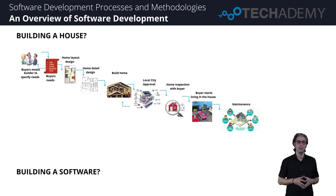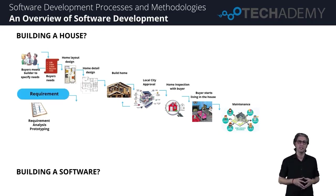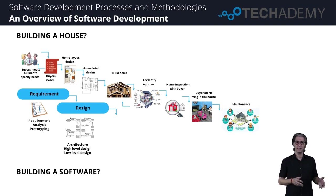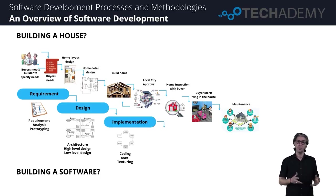Now let's see how similar or different software development is compared to the examples we discussed. When we build software, similar to building a flat, we look at the requirements — exactly what we need to build. We do analysis of different options, or we might do a prototype and present it to our client. But at the end of this step, we have to get exact definitions and dimensions of what we are looking to construct. Next come the software developers and architects, who will design the system, architect the system, and decide what the different components are and how they will work together. Once the design is finished, they will start coding and unit testing.